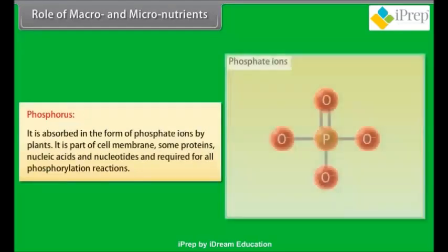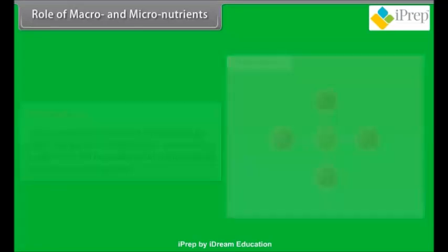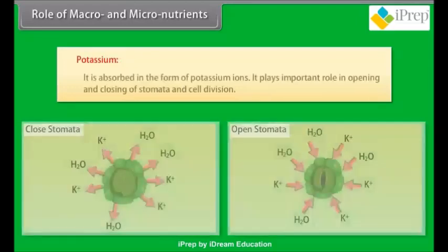Phosphorus: it is absorbed in the form of phosphate ions by plants. It is part of the cell membrane, some proteins, nucleic acids, and nucleotides, and is required for all phosphorylation reactions. Potassium: it is absorbed in the form of potassium ions. It plays an important role in the opening and closing of stomata and cell division.